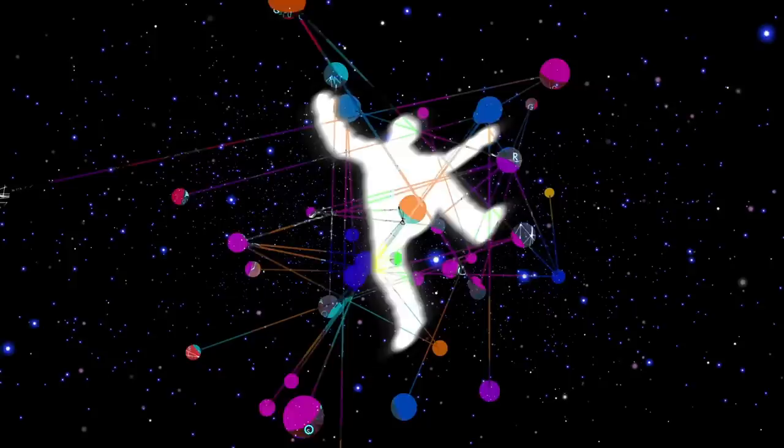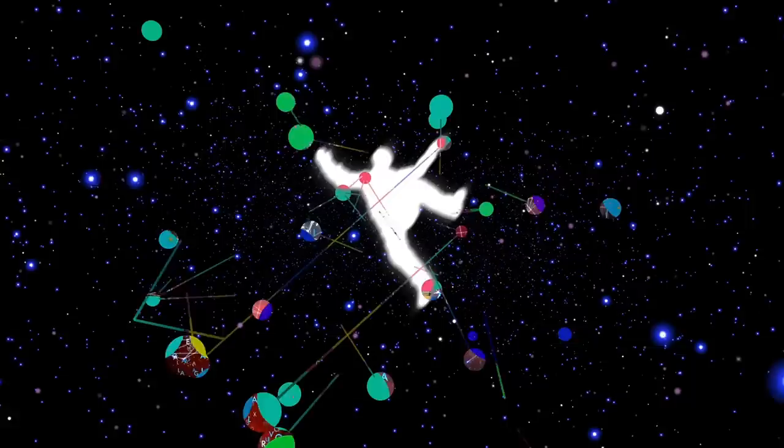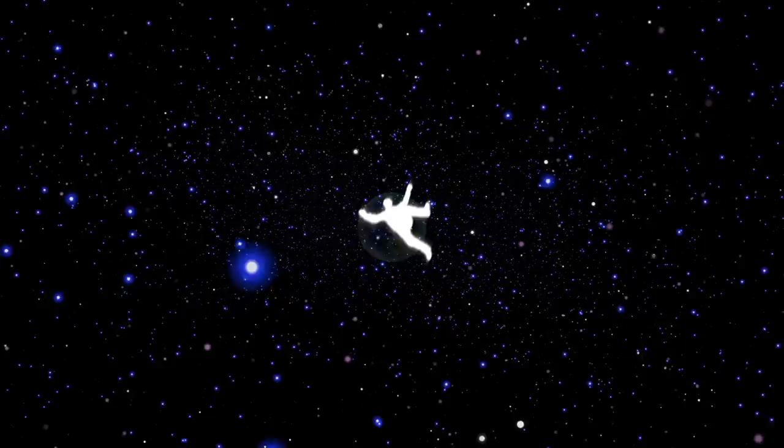Eventually, most if not all of these planets devolved into dysfunction at best and total extinction at worst. This was the story for almost all except one planet. The planet from which the entire network had originated from. A planet named Earth.